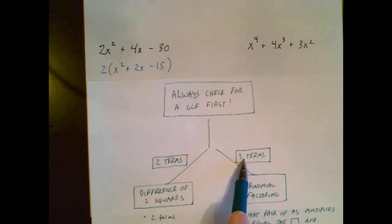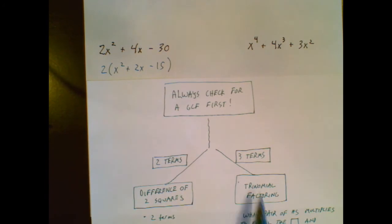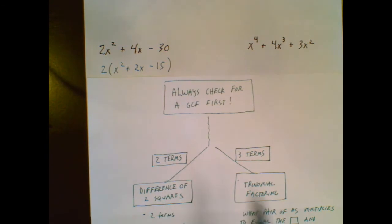So I factored out a GCF, and now as I flow down my flow chart, I see that there are three terms, because I'm only paying attention to the inside.